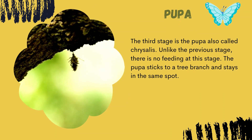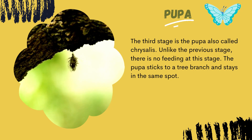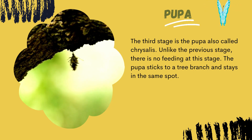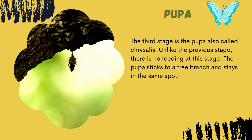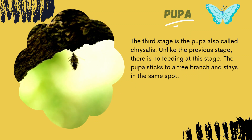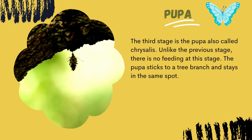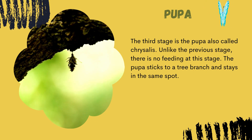The third stage is the pupa, also called chrysalis. Unlike the previous stage, there is no feeding at this stage. The pupa sticks to a tree branch and stays in the same spot.